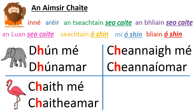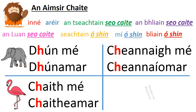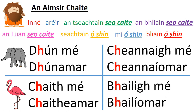And in the dara réimniú — the second family of verbs — na briathra dhá shiolla — the two-syllable verbs: Cheannaigh mé, tú, sé, sí, sibh, siad — ach cheannaíomar — we bought. Look: there's a leathan vowel 'a', and a leathan vowel 'a' in the ending — leathan le leathan, sin ceart. And the last one: Bhailigh mé, tú, sé, sí, sibh, siad — ach bhailíomar — we collected. Caol vowel, and caol vowel in the ending — caol le caol, sin ceart go leor.